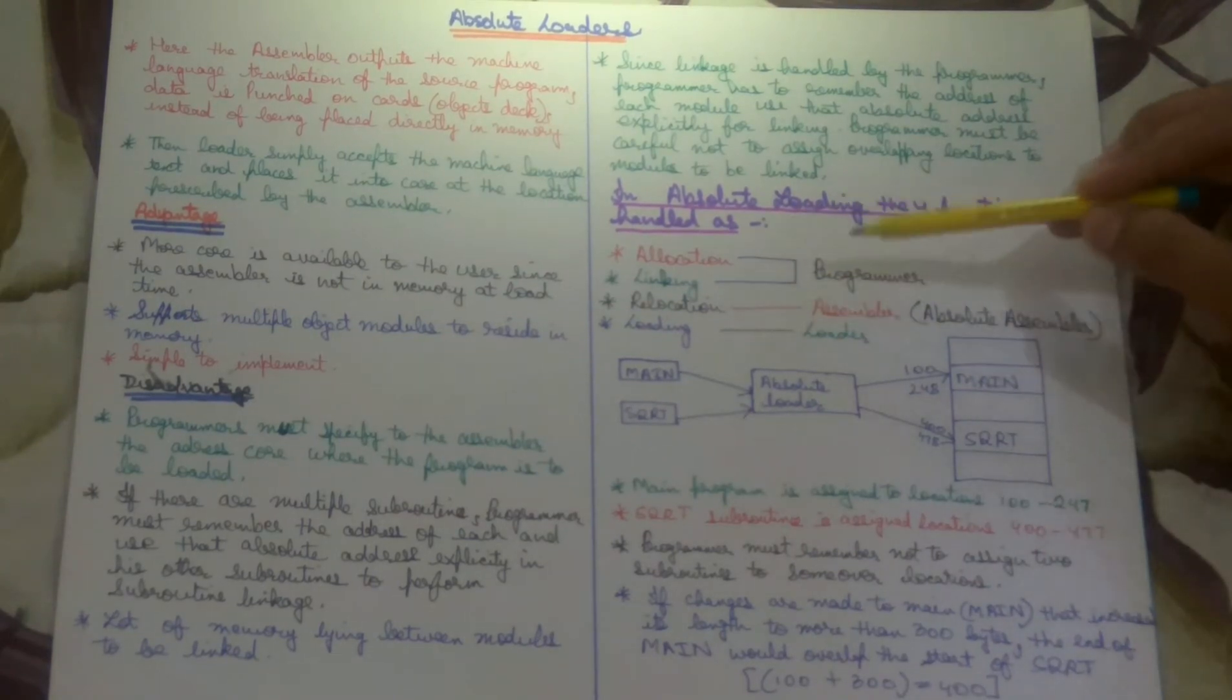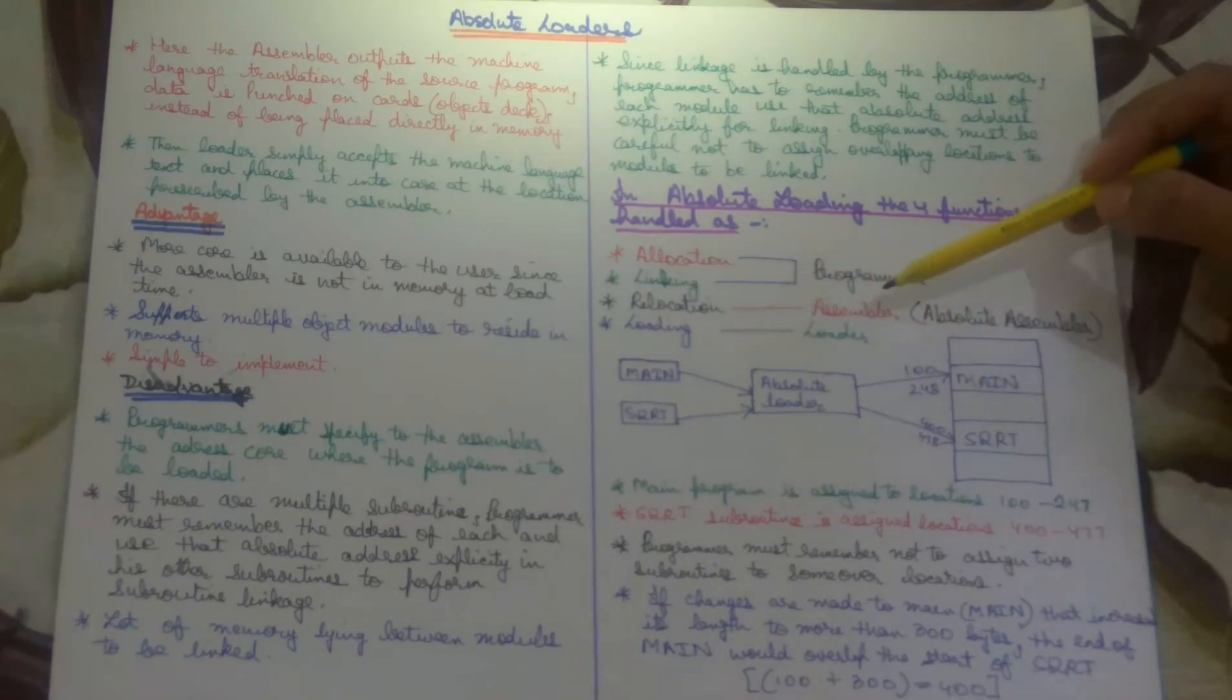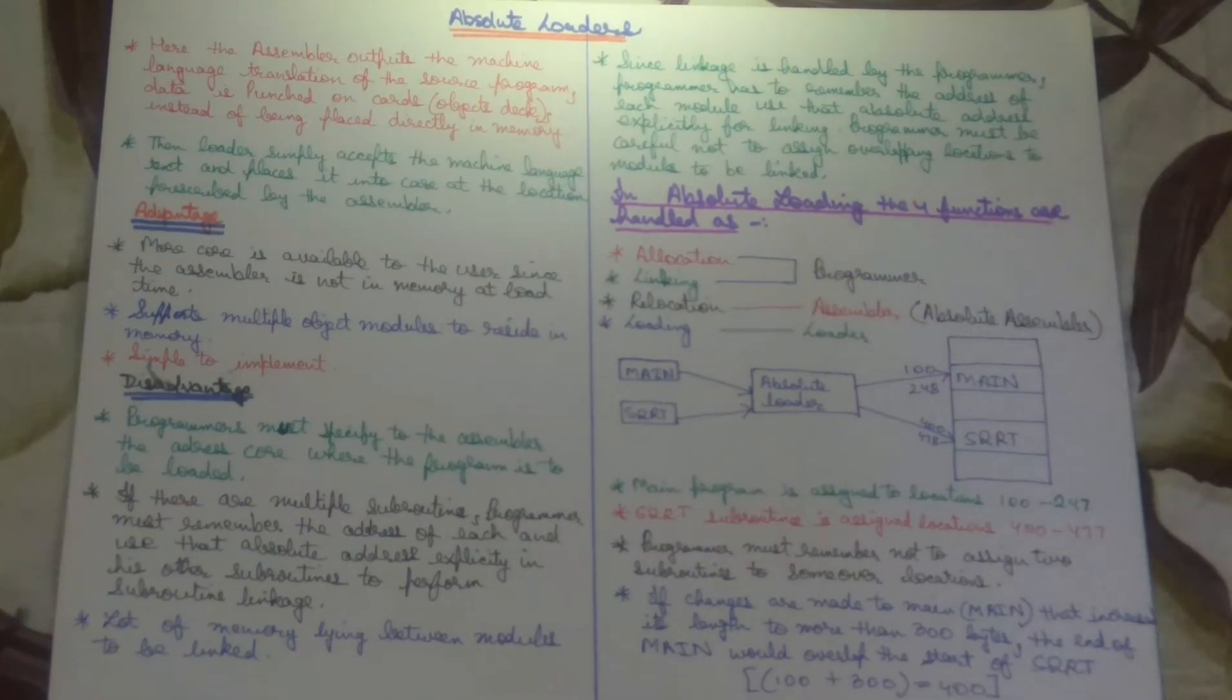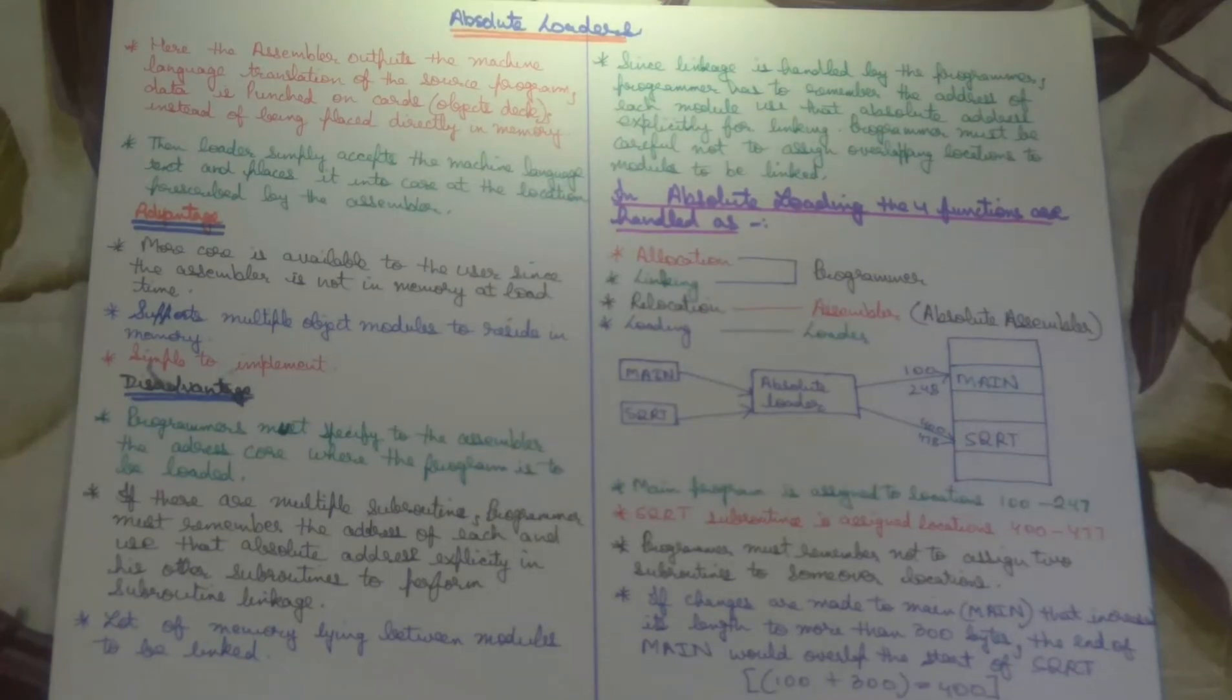These four functions are performed by absolute loaders. Allocation and linking done by the programmer, relocation done by the assembler, and loading done by the loader. We will see relocation in the next video. In this video I will tell you that relocation is when the programmer gives the address to the assembler, the assembler gives it to the loader. The loader has to know that the assembler has already been told where the program should be placed. The assembler relocates and gives it to the loader to prevent overlapping.